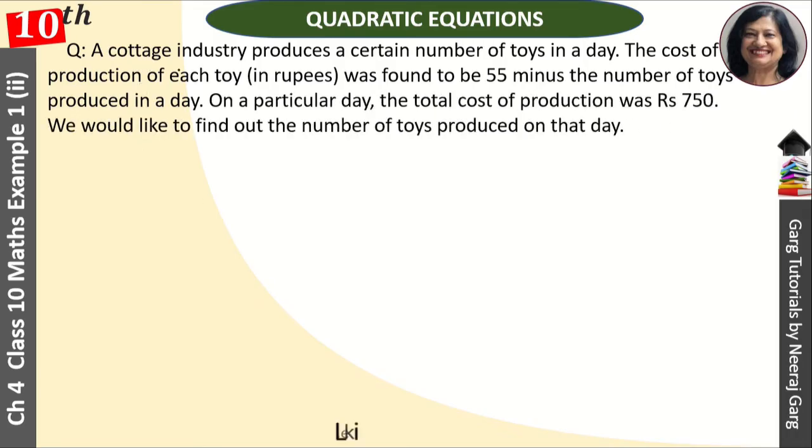Question here was, a cottage industry produces a certain number of toys in a day. The cost of production of each toy was found to be 55 minus the number of toys produced in a day.